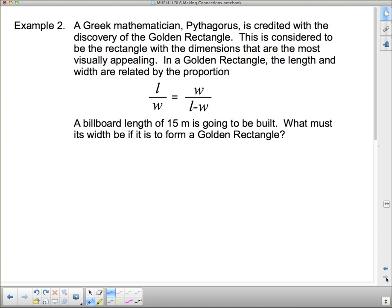So let's take a look at the next question here. A Greek mathematician, Pythagoras, is credited with the discovery of the golden rectangle. This is considered to be the rectangle with the dimensions that are the most visually appealing. In a golden rectangle, the length and width are related by this proportion given here: length divided by width equals width over length minus width. A billboard of length 15 meters is going to be built. What must its width be if it is to form a golden rectangle? So this is a matter of solving a ratio. I'm given this piece of information. Length is 15 meters.